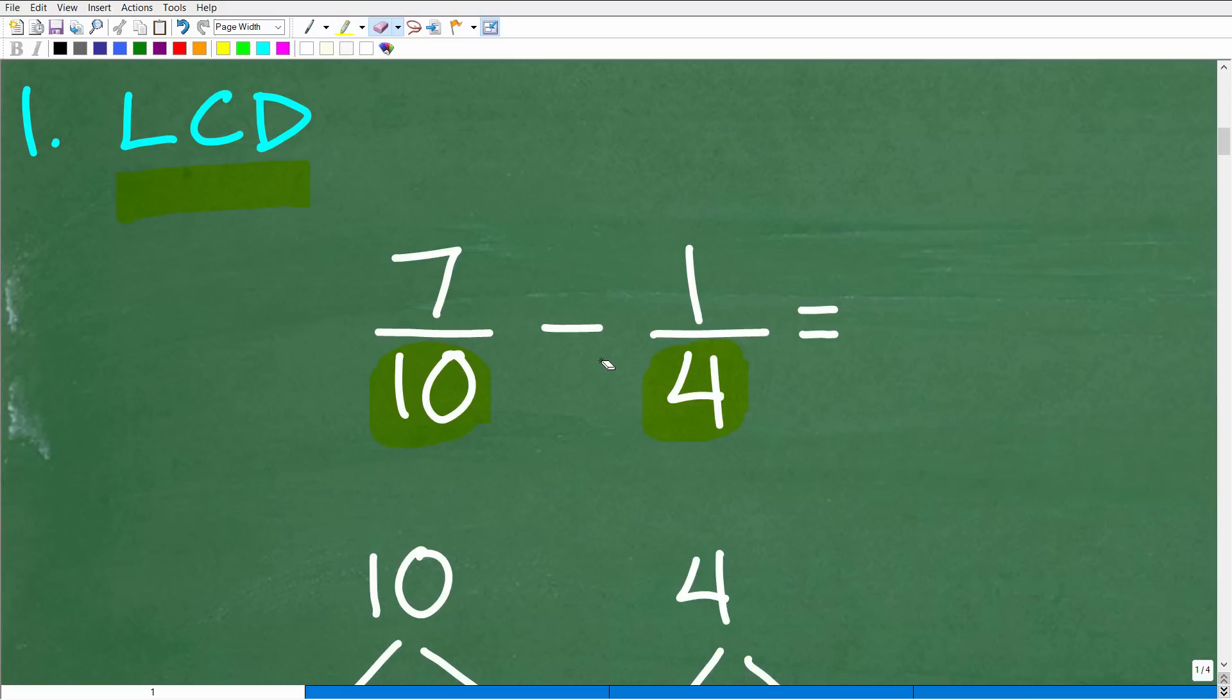In order to add or subtract fractions, these denominators must be the same. We have a situation here - we have 10 and 4. Clearly, they're not the same. So we need to find a denominator that is in common with these numbers. That is called the lowest common denominator.